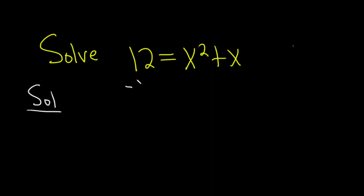In this case, we'll subtract 12 from both sides. That leaves us with x squared plus x minus 12, and that's equal to 0.